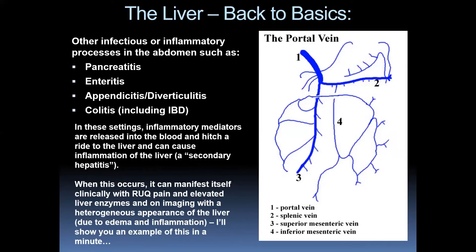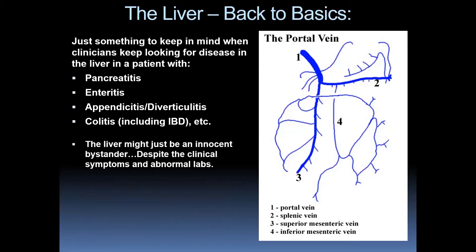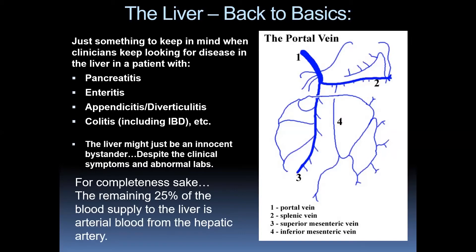In these settings, inflammatory mediators get released into the blood and hitch a ride to the liver, causing inflammation — secondary hepatitis. This can manifest clinically with right upper quadrant pain, elevated liver enzymes, and on imaging with a heterogeneous appearance of the liver due to edema and inflammation. Keep in mind: when clinicians keep looking for disease in the liver in a patient with pancreatitis or colitis, the liver might just be an innocent bystander — the process may be originating somewhere else.